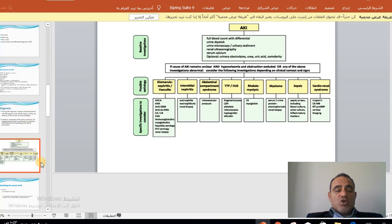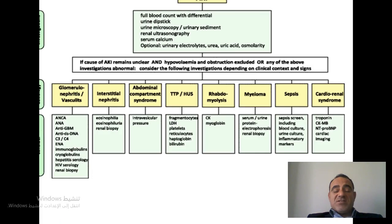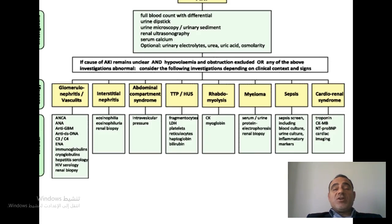The baseline investigations needed for every patient with AKI include: CBC with differential, urinalysis including urine dipstick, urine microscopy, and urine sediment examination, renal and urinary tract ultrasonography, and serum calcium. Optionally, urinary electrolytes, urea, uric acid, and osmolality may also be obtained.